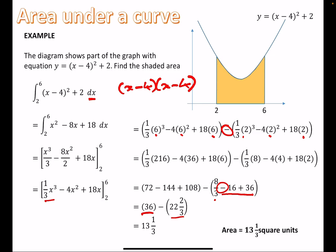You must write your answer in terms of square units unless told differently. In a graph context, the units are just 'units,' and because it's an area they are square units. So the answer is 13⅓ square units. You can write it as 13⅓ units² or 'square units' — either is fine — but you must make clear it has some form of unit. Nothing much different from what we did with definite integrals; it's just about interpreting the question correctly.